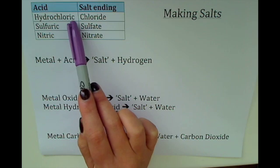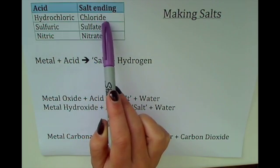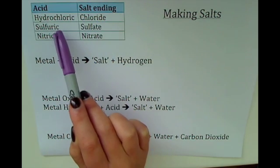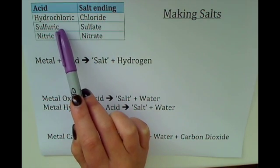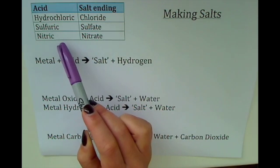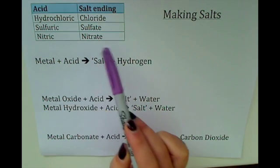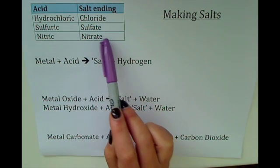Hydrochloric acid makes chlorides, sulfuric acid makes sulfates, and nitric acid makes nitrates.